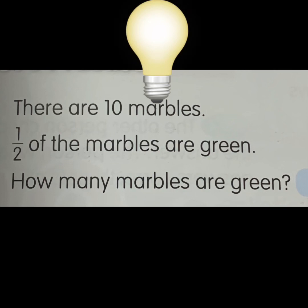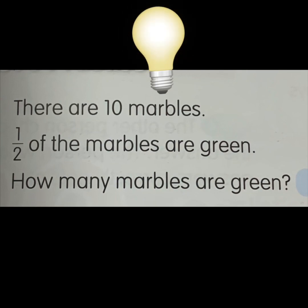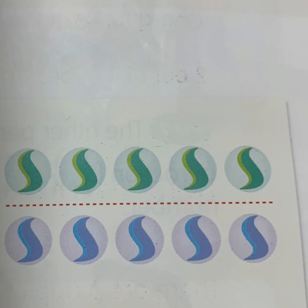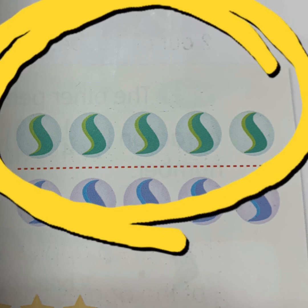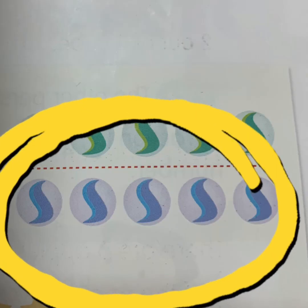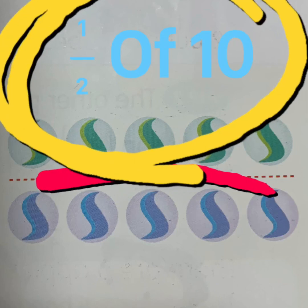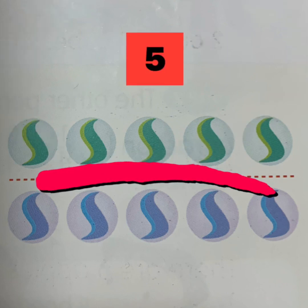Now look at the next example. There are ten marbles — half of the marbles are green, how many marbles are green? I have divided them into half and there are five in each group. This set is green — five marbles in one half and five marbles in another half, this is blue color. So half of the marbles are green means half of ten, and half of ten is five. Well done — there are five green marbles.